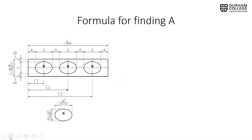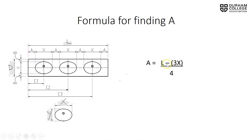To solve for A, we take the overall length L and subtract 3 times X — three widths of the lavatory — and then divide all that by 4, because we want four equal spaces in and between and around those three lavatories. So: A = (L − 3X) ÷ 4.